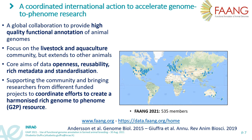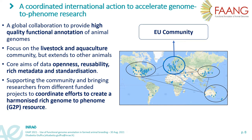FANG is a coordinated international action to accelerate genome-to-phenome research. Since 2015, with the first white paper, it is a global collaboration that aims to provide high quality functional annotation of animal genomes, with a focus on the livestock and aquaculture community. Core aims are data openness, re-usability, rich metadata, and standardization. The global FANG collaboration can be seen as a network of geographical communities, individually made of institutes with long-term track records of collaboration in animal sciences. Both the US and Australian communities are extremely representative in FANG and include partners who pioneered the FANG action.